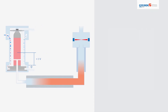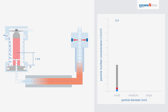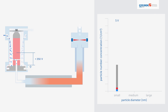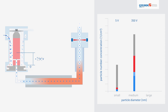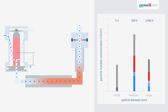The time required for particles to travel from classification to counting assigns the particle sizes to particle concentration. Because only negatively charged particles exit the DMA, the particle count must be corrected for neutral and positive particles. Every voltage scanning cycle results in a preliminary particle size distribution.